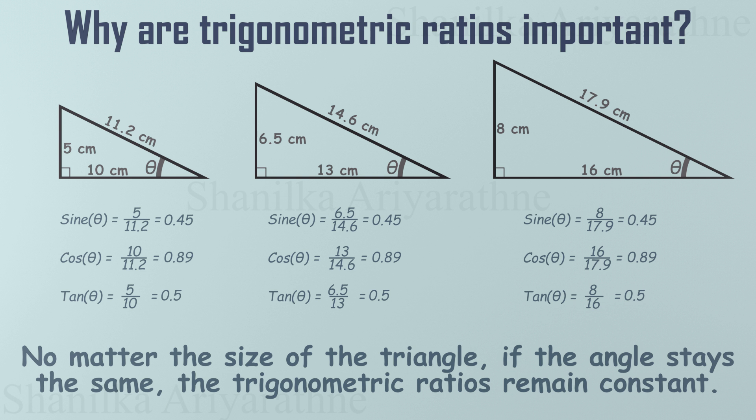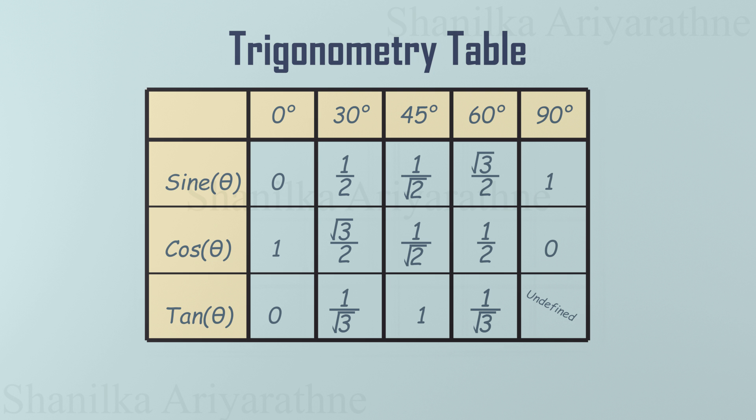Since trigonometric ratios stay constant for a given angle, guess what? We don't have to calculate them every single time. There are pre-calculated value tables for each angle. And the best part? Your calculator can give you these values instantly. Why is this so helpful? Because now, when you're working with a right-angled triangle, you don't need to measure all the sides and crunch numbers to find the ratios. Instead, you can measure the angle, look up the ratio from a table or use your calculator, apply the ratio to find missing side lengths or angles. Quick and easy.